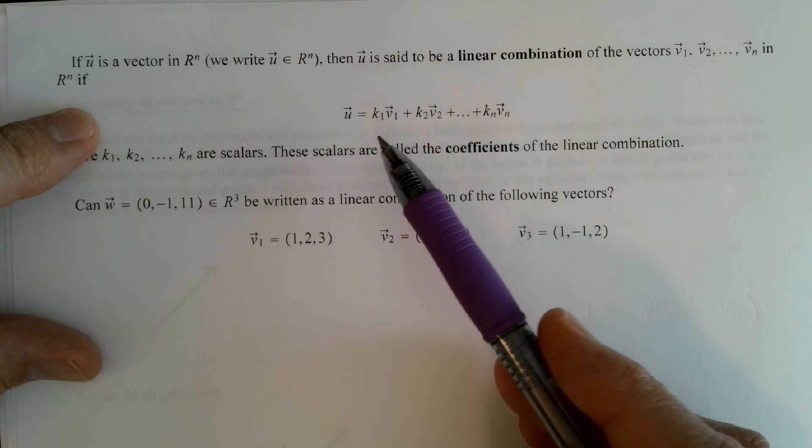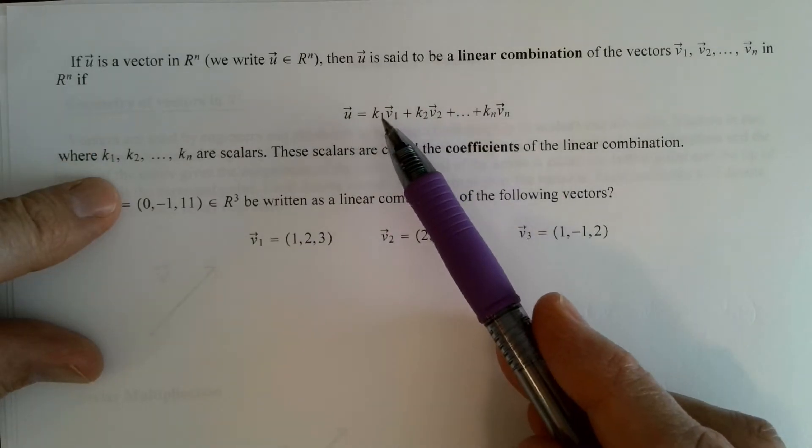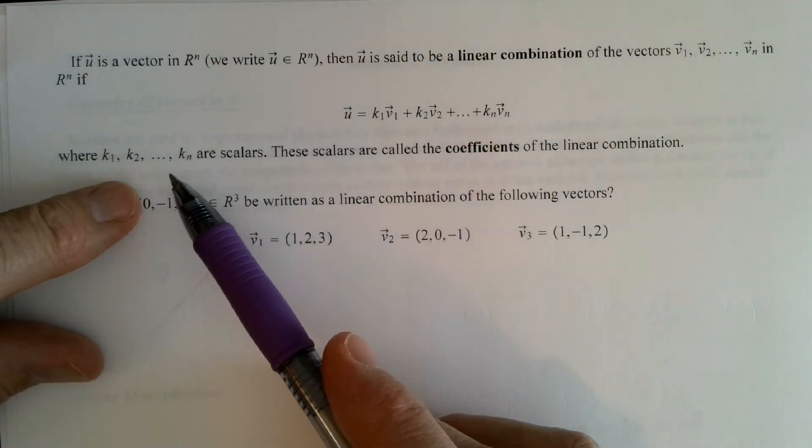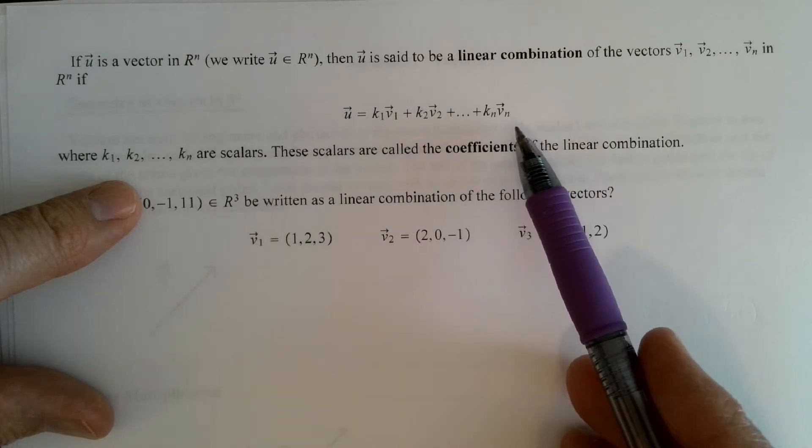Then u is a linear combination if I can write u this way. Notice k1 through kn, those are scalars, and so this is called a linear combination.